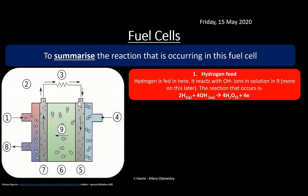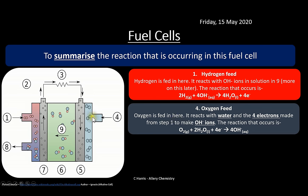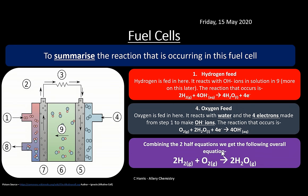To summarize the fuel cell reactions: at the anode: 2H₂ + 4OH⁻ → 4H₂O + 4e⁻. At the cathode: O₂ + 2H₂O + 4e⁻ → 4OH⁻. Combining and cancelling common species gives the overall reaction: 2H₂ + O₂ → 2H₂O. The only product is water.